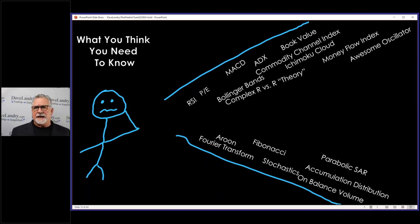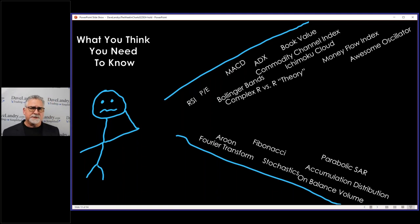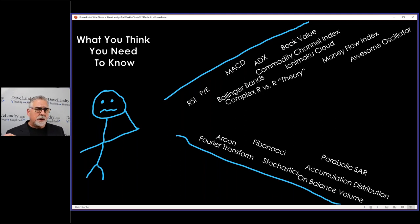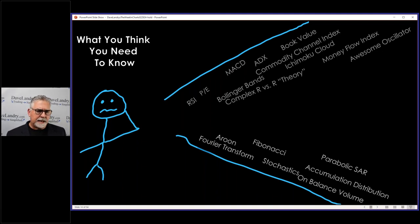Somebody was using this arcane counting method and he had a trend filter on the bottom, and he would only take waves that went in the direction of the trend filter. It's like, well, why not just use the trend filter? When you boil it all down, all you have to do to make money trading is capture a trend. The only way to make money trading is to capture a trend. But part of the problem is you end up with analysis paralysis — you plot so many indicators on the chart you can no longer see the chart.